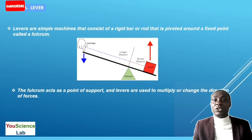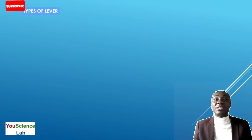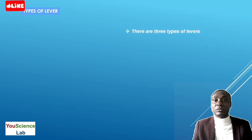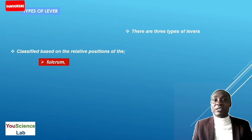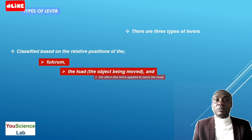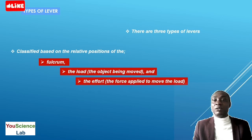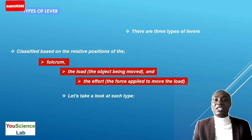There are basically three types of levers. The three types of levers are classified based on the relative position of: the fulcrum, also known as the pivot; the load, which is the object being moved or lifted; and the effort, which is the force applied to move the load. Let us take a look at each type of lever.